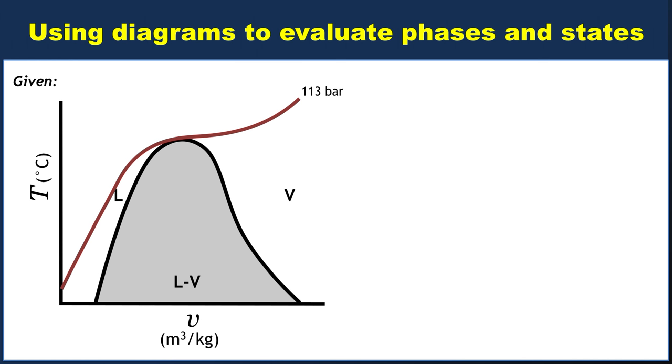So here's one that intercepts the critical point at the top of the vapor dome. Here's one that passes through the middle of the vapor dome, and then here's one that passes through the bottom of the vapor dome.